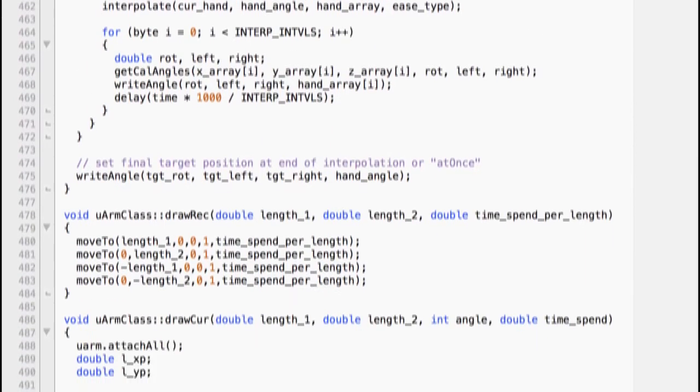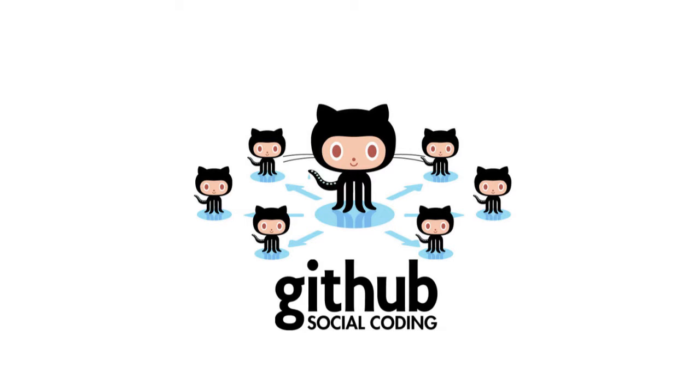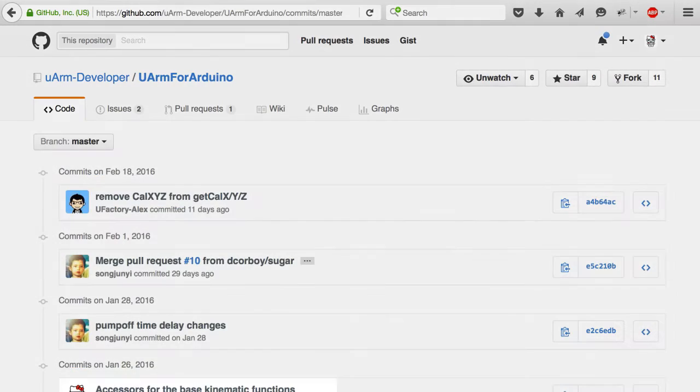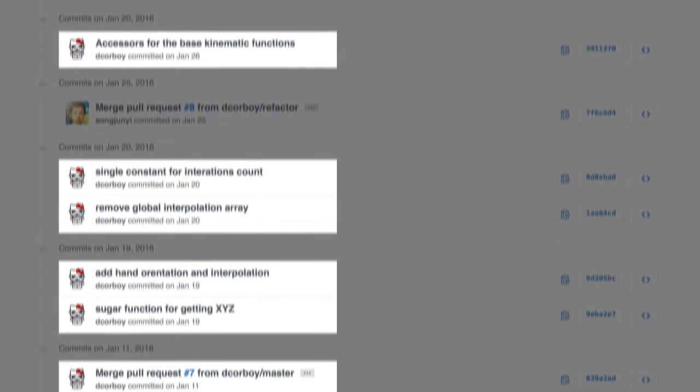Open source also means that I could contribute those changes back to the robot's creators. That's me, Hello Kitty Stormtrooper. When the changes were accepted, they became part of the firmware code that everyone uses to program the arm.